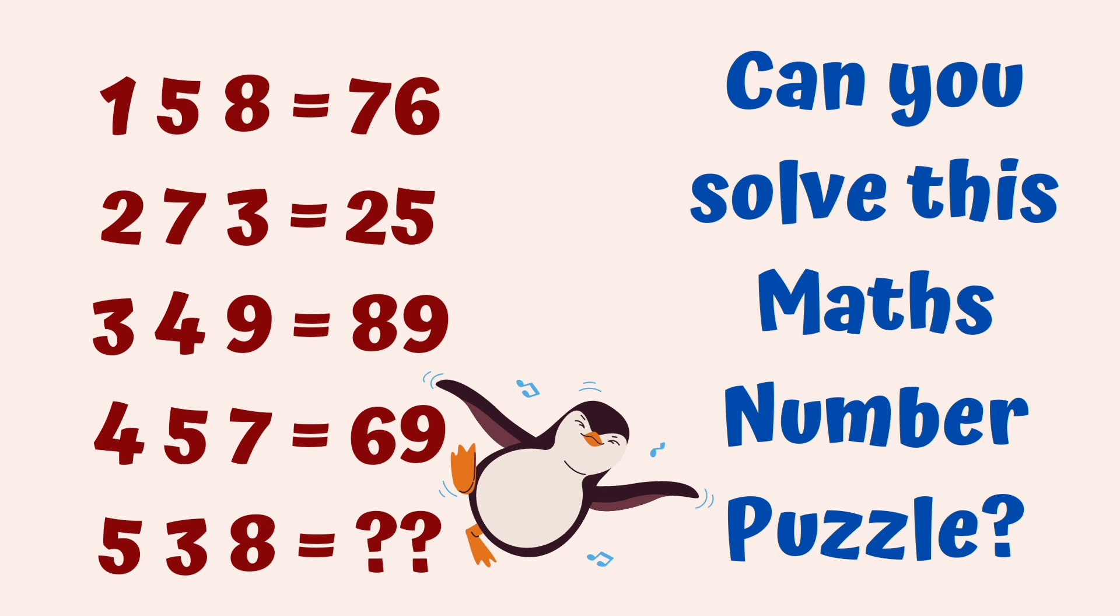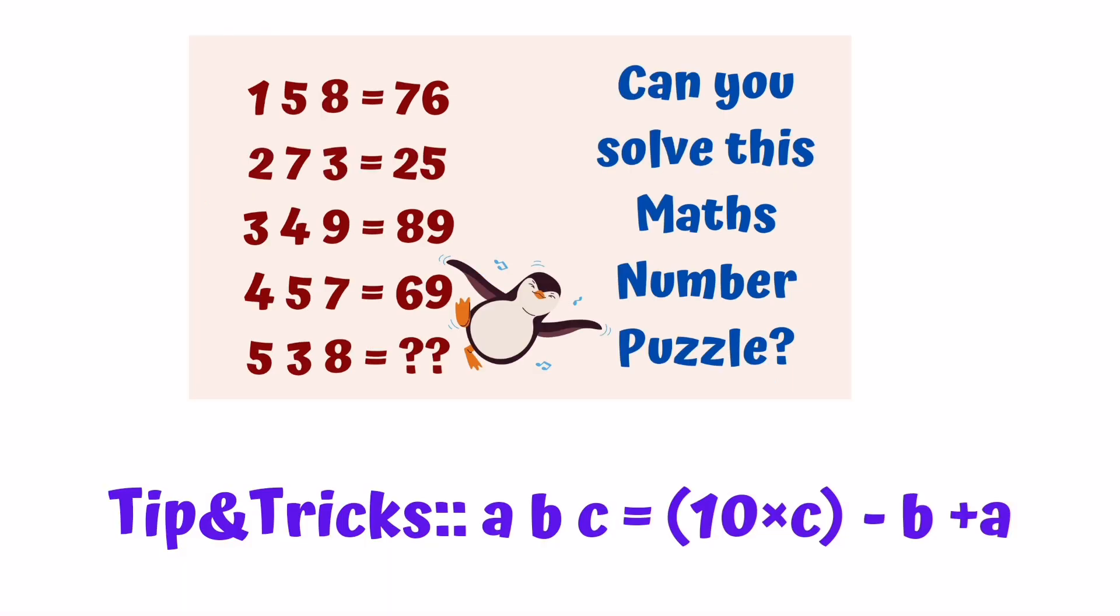Let's look at the solution. First, the tips and tricks: for A, B, C, we apply the formula (C times 10) minus B plus A. Yes friends, let's apply this trick to all the rows.